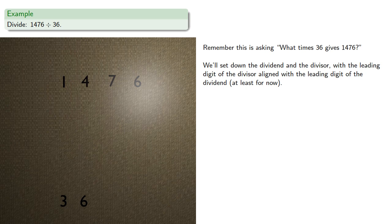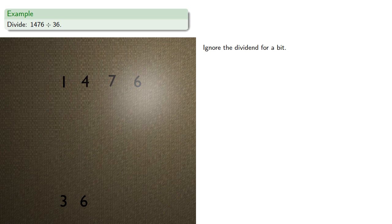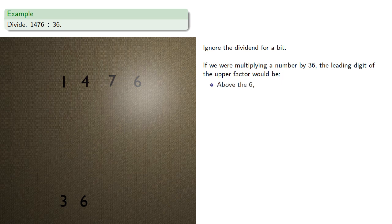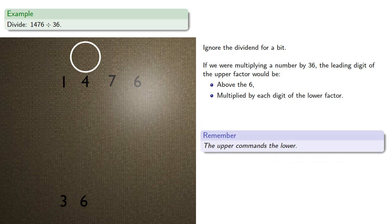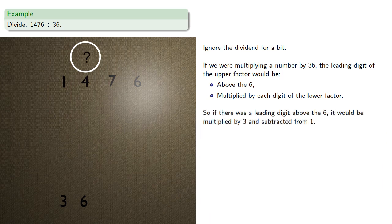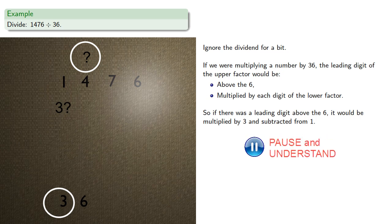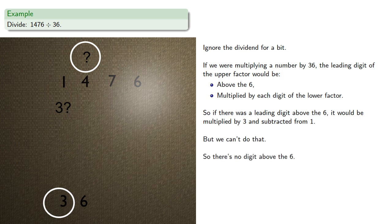At least for now. Let's ignore the dividend for a moment. If we were multiplying a number by 36, the leading digit of the upper factor would be somewhere above the 6, and then multiplied by each digit of the lower factor. Remember, the upper commands the lower. So if there was a leading digit above the 6, it would be multiplied by 3 and subtracted from 1. But we can't do that, so there's actually no digit above the 6.